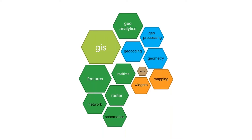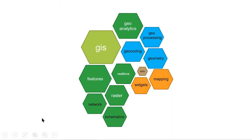Looking at the module diagram, the GIS module is the big central part of the Python API — your pathway to connect into it. All the other pieces include geo-analytics for big data, geocoding, geoprocessing, working with geometry, editing, mapping with a map control, real-time data, raster, working with features individually, network analysis, and schematics. All that functionality can be used by those different personas.